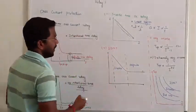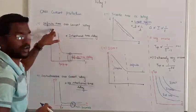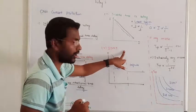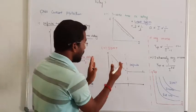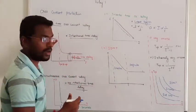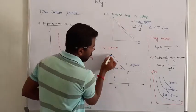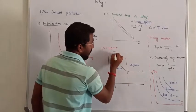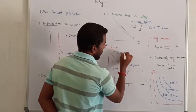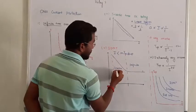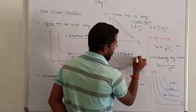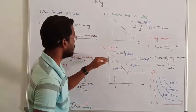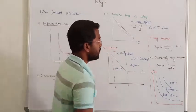Next, the trend is IDMT — I denotes Inverse, D denotes Definite. So what is the conclusion? Inverse Definite Minimum Time overcurrent relay. It is a combination of inverse relay and definite time overcurrent relay. If the value of current is less than 10 times the pickup current, it acts as an inverse relay. If the value becomes greater than 10 times the pickup current, it acts as a definite time overcurrent relay.